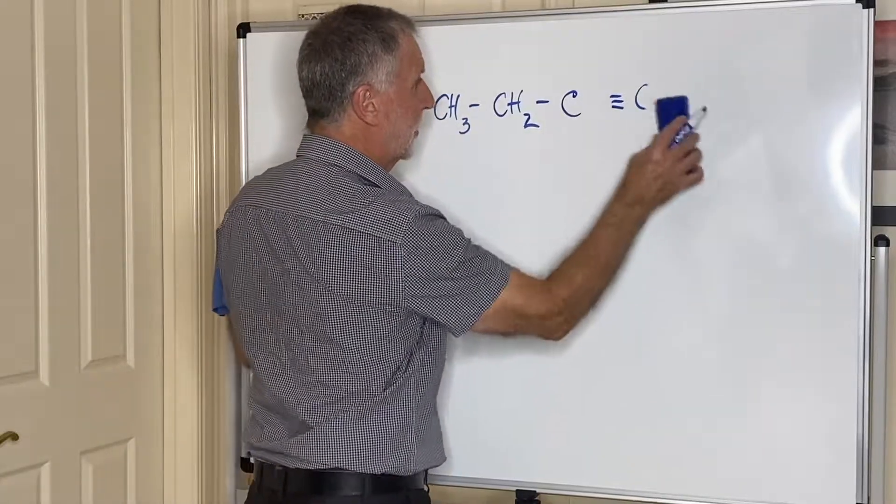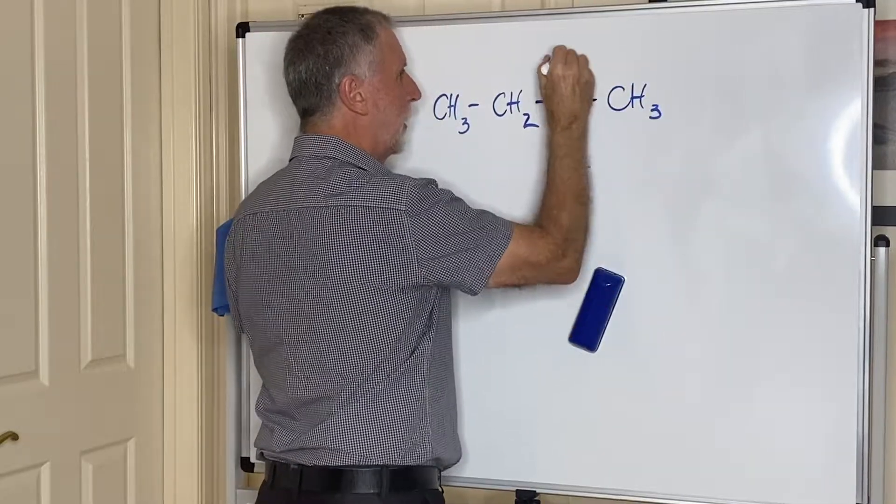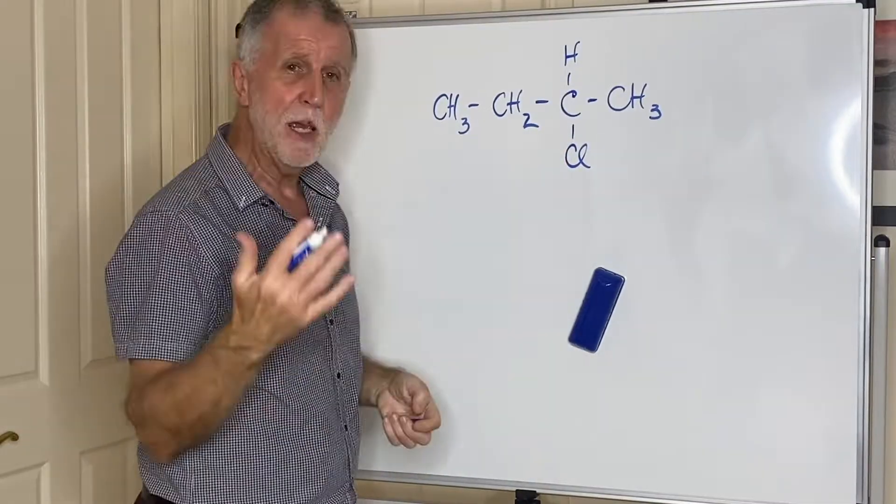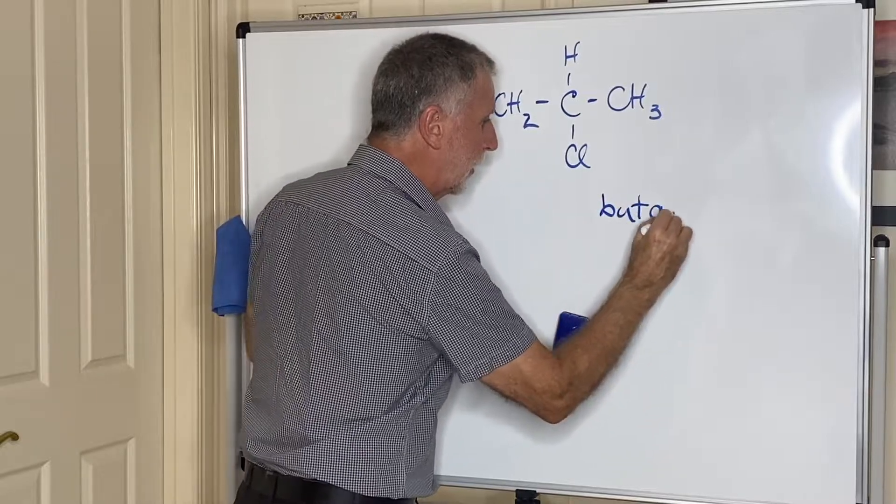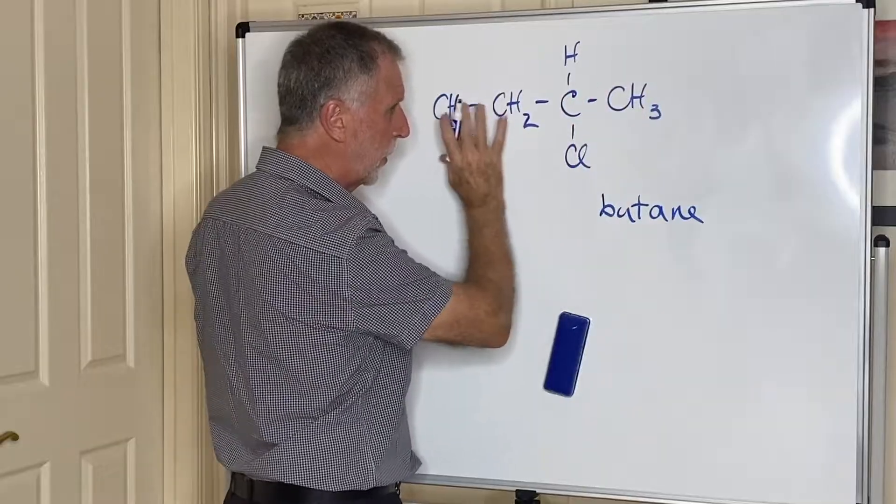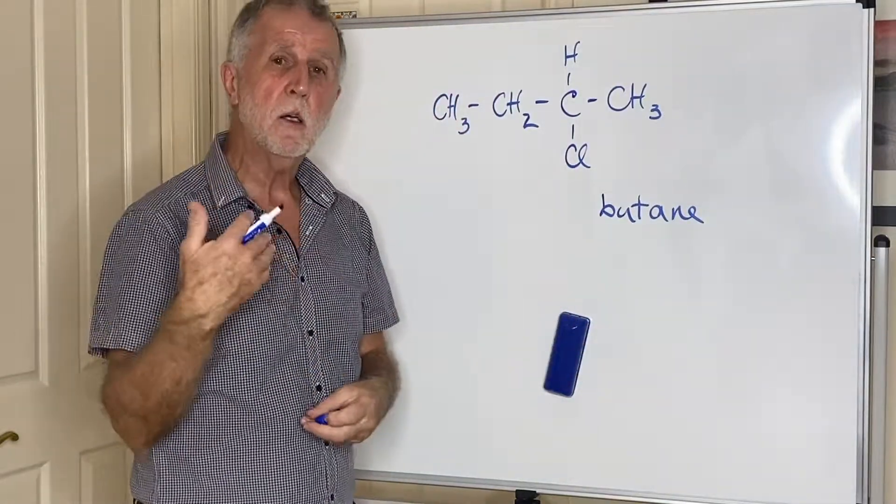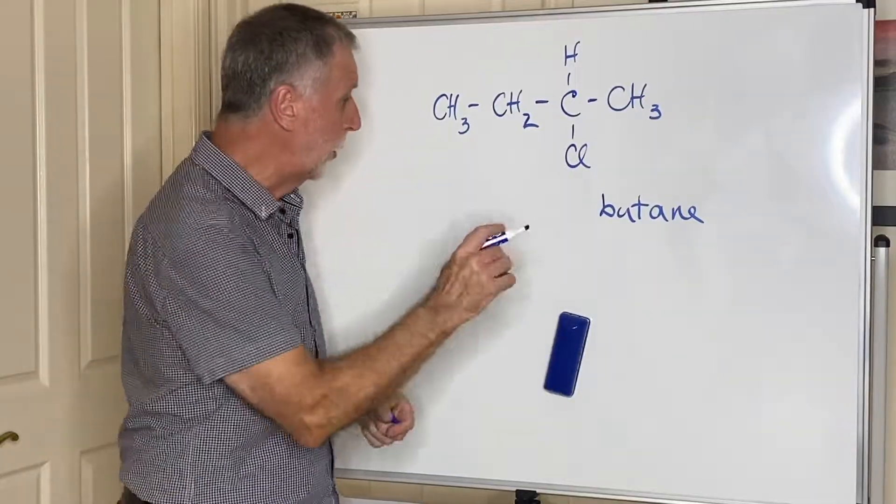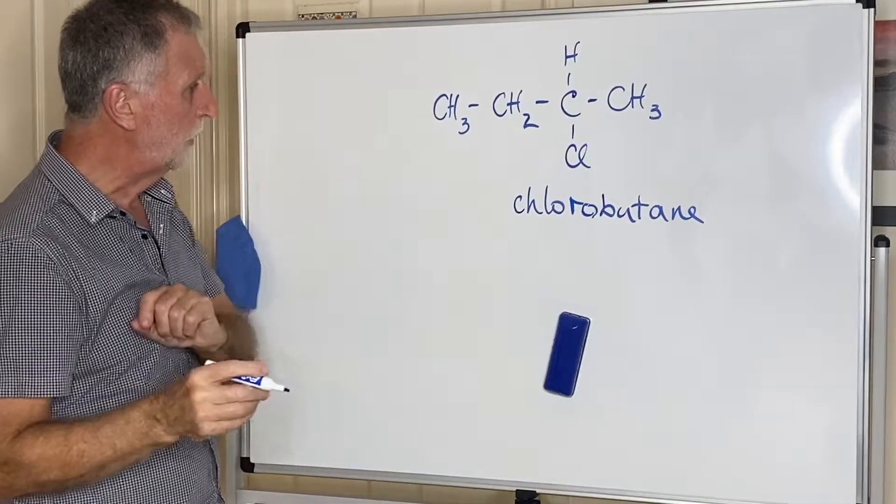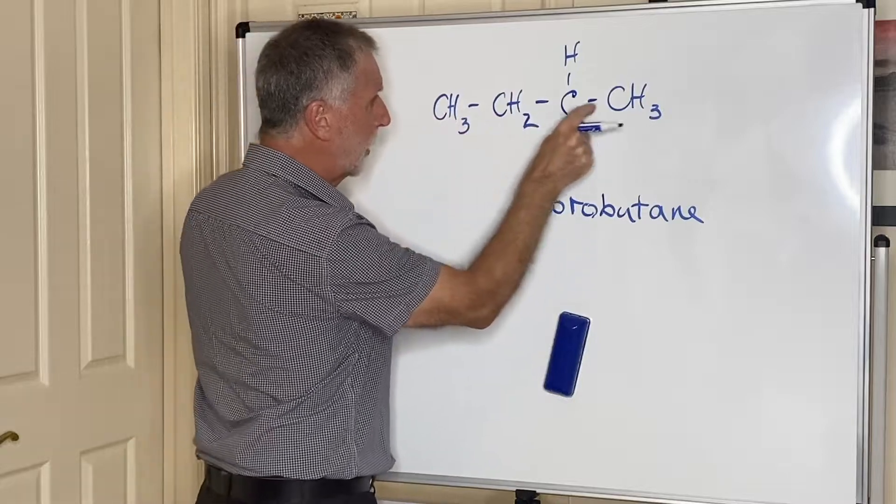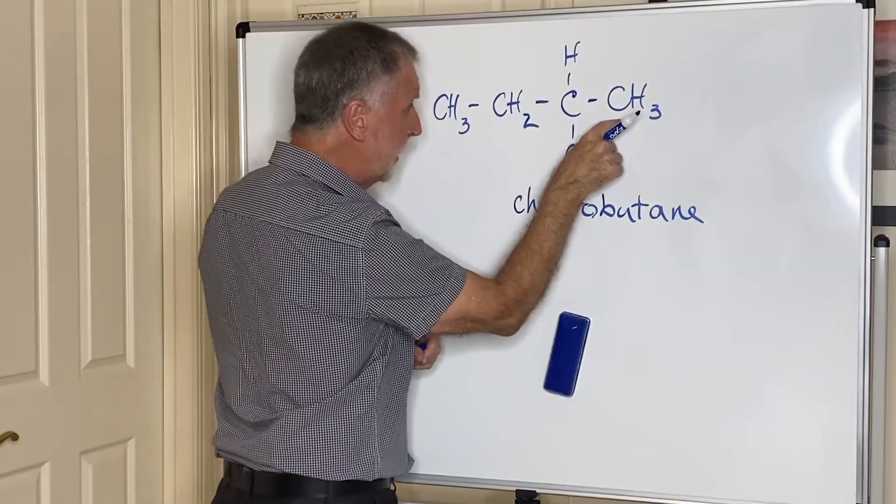Let's put some other functional groups in. Let's put a chlorine in there, so this now is a haloalkane, a chloroalkane. The longest line of carbons is four which makes it a butane. The halogens are used as prefixes, chlorine becomes chloro, so I'm going to put chlorobutane. But still not quite finished yet because with four carbons there's more than one place the chlorine can go. At the moment it's on carbon number two, so this is 2-chlorobutane.